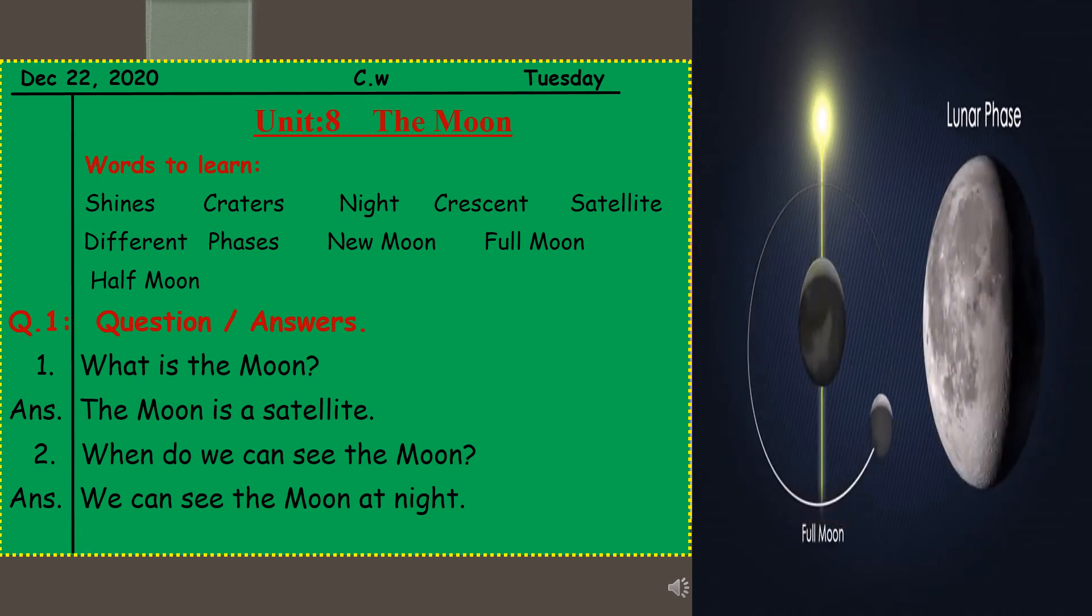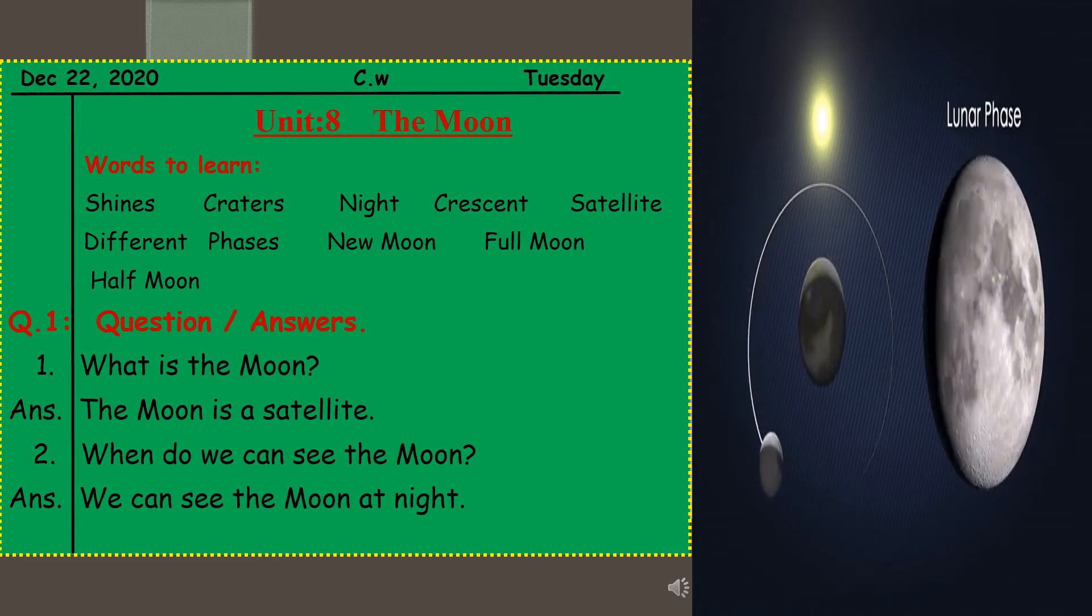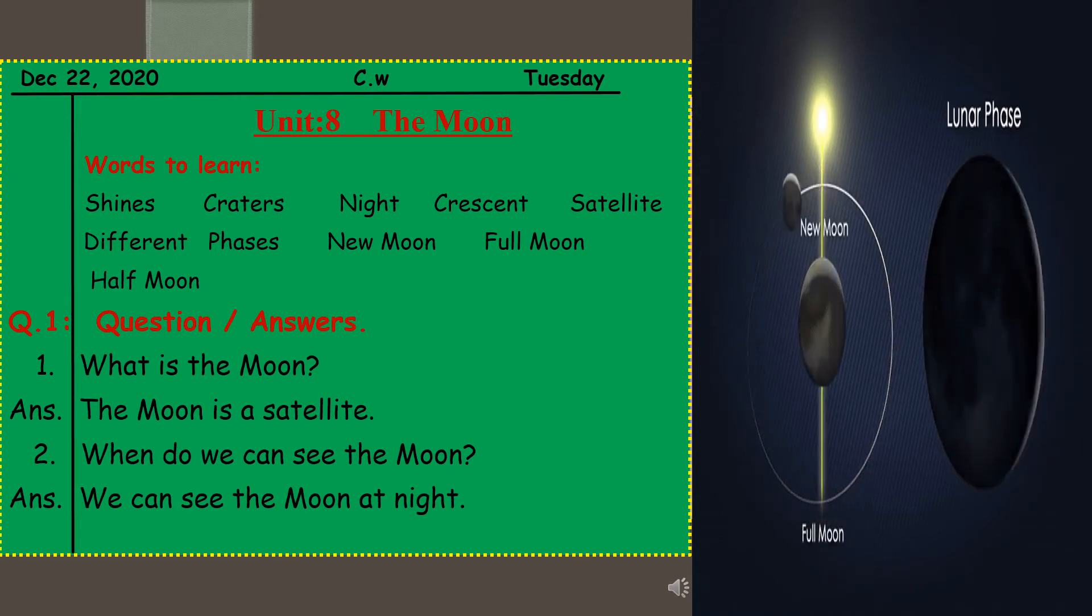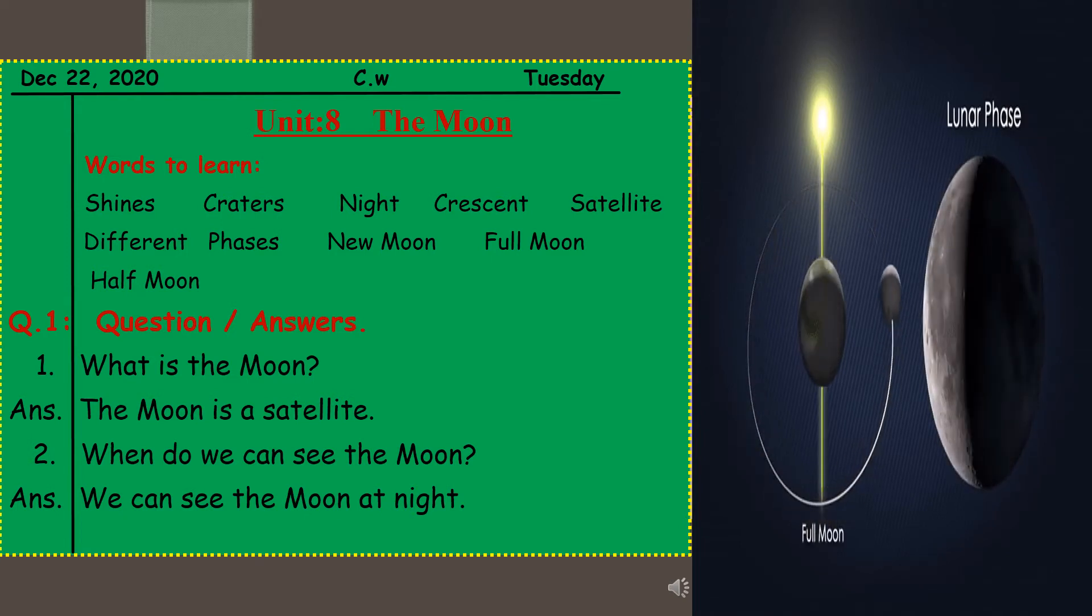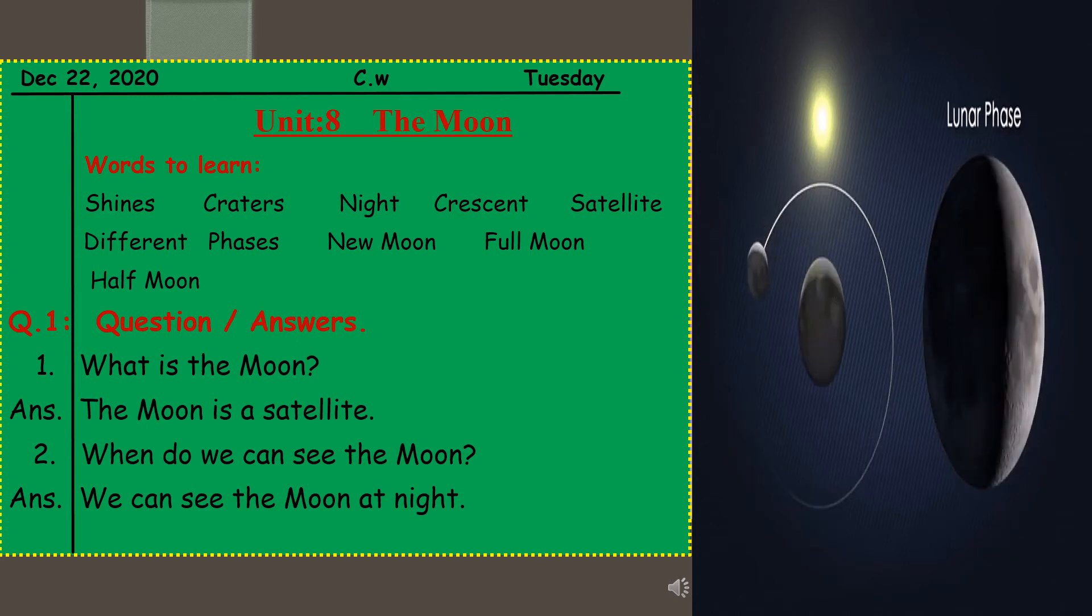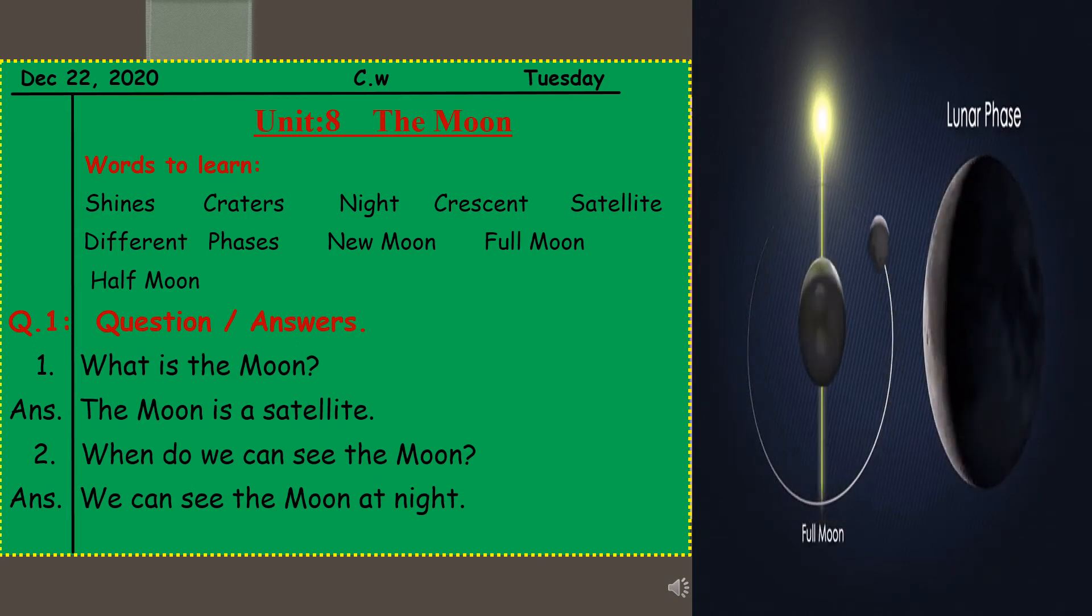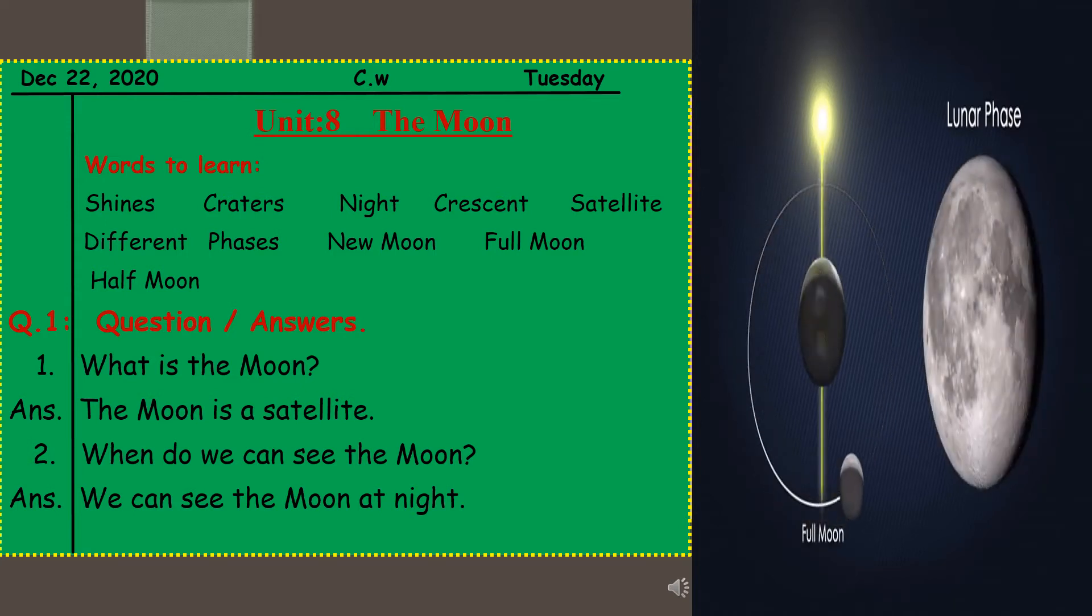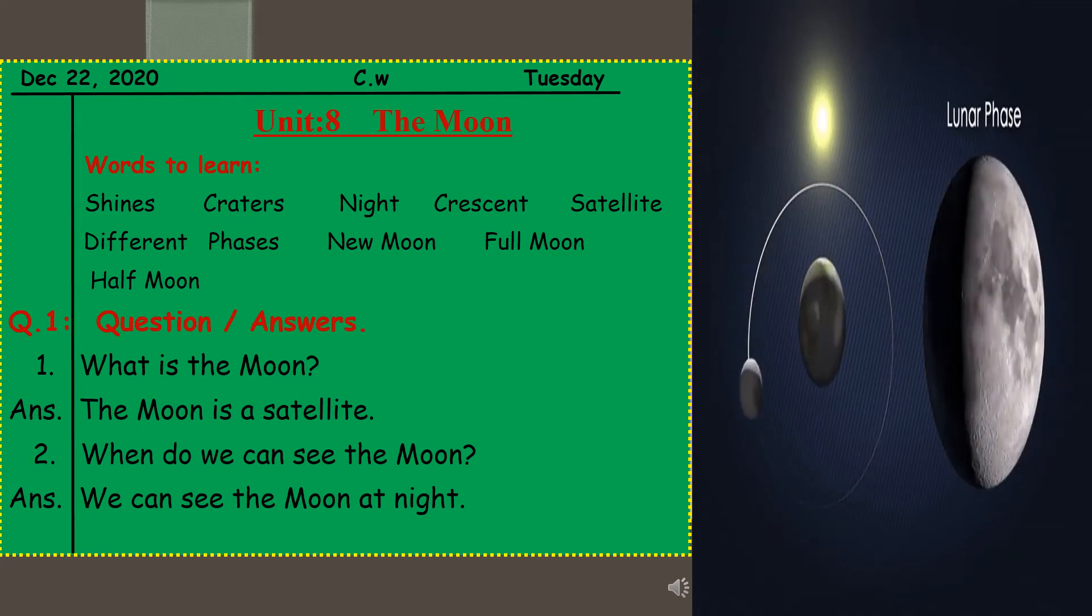Next word is satellite. Satellite. The moon is a satellite. As I told you that, and you have learned that any object that orbit a planet is called satellite, and moon is orbiting our planet Earth, so it is called the satellite. S-A-T-E-L-L-I-T-E, satellite.